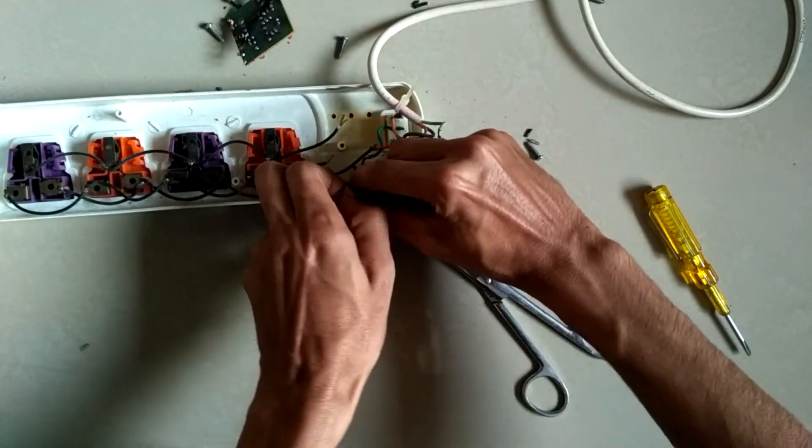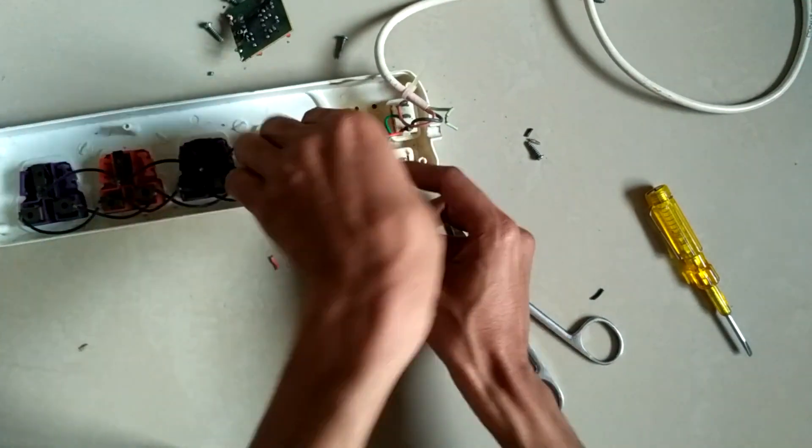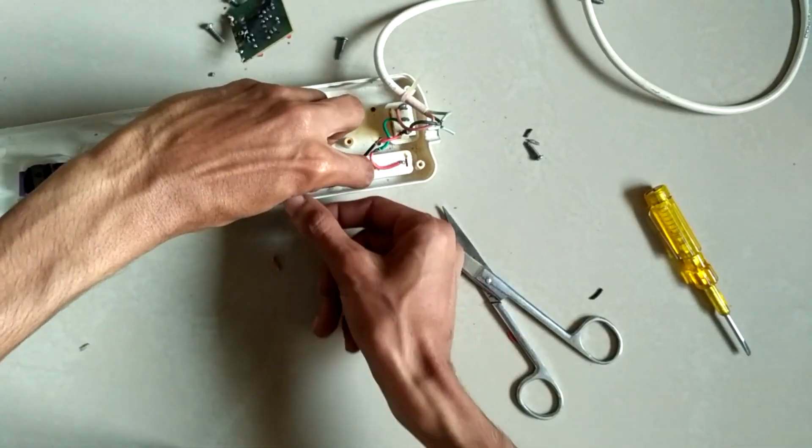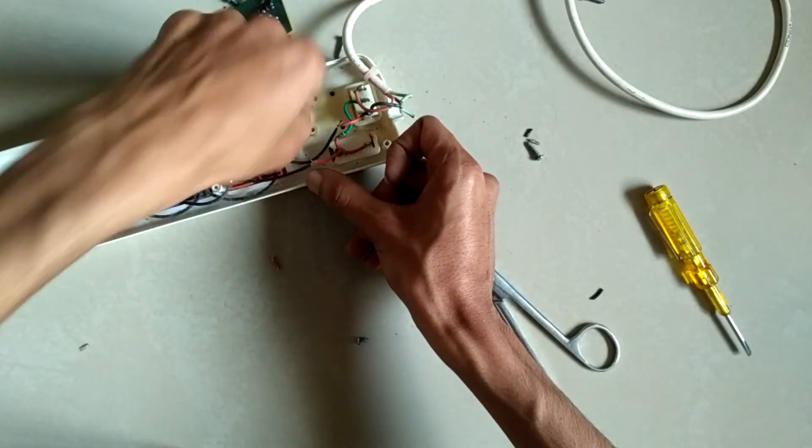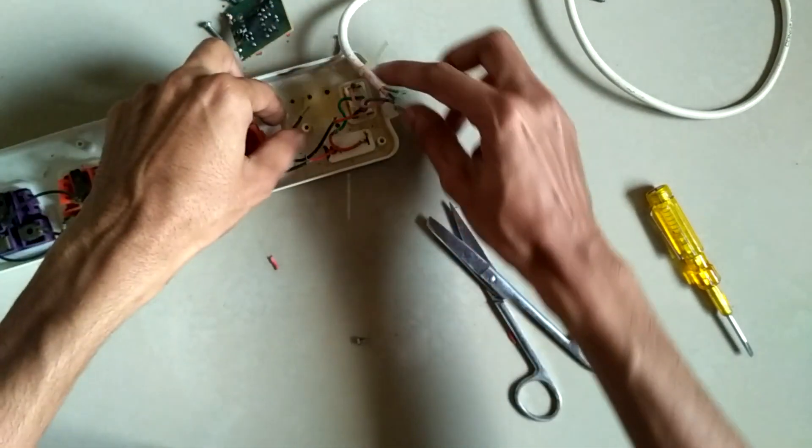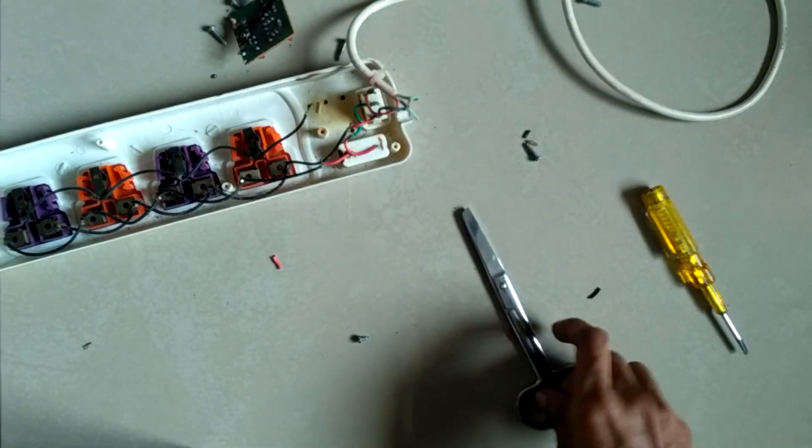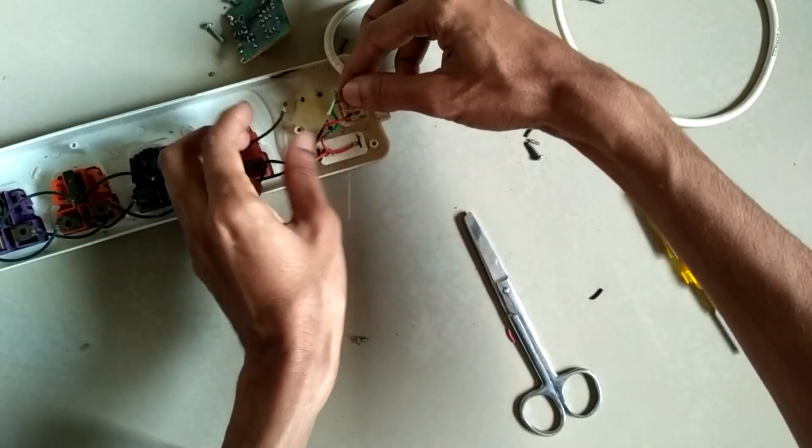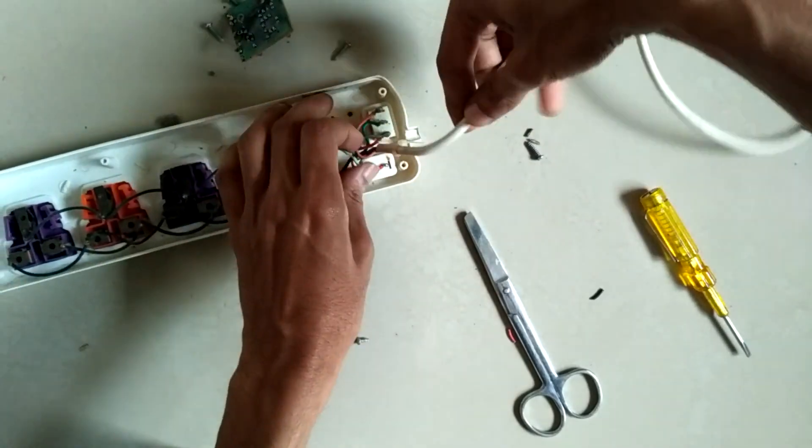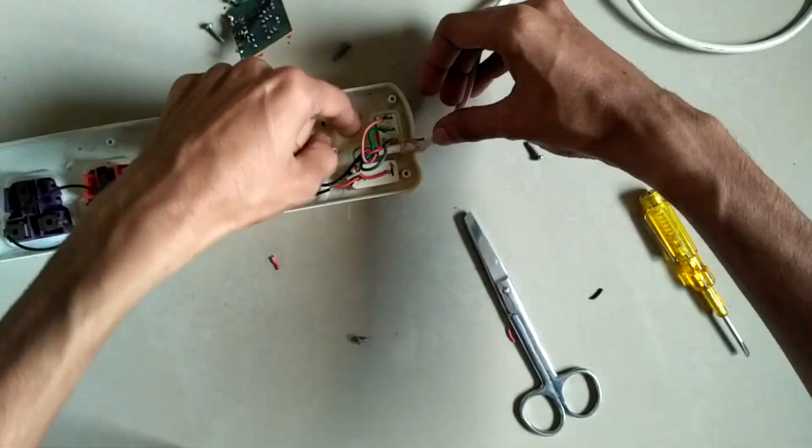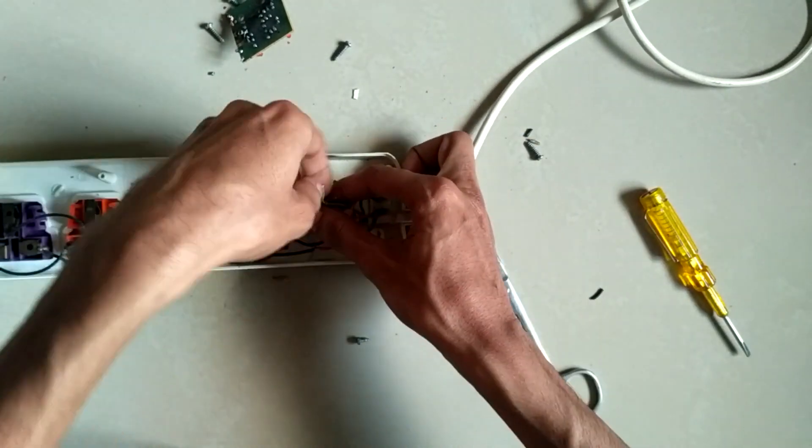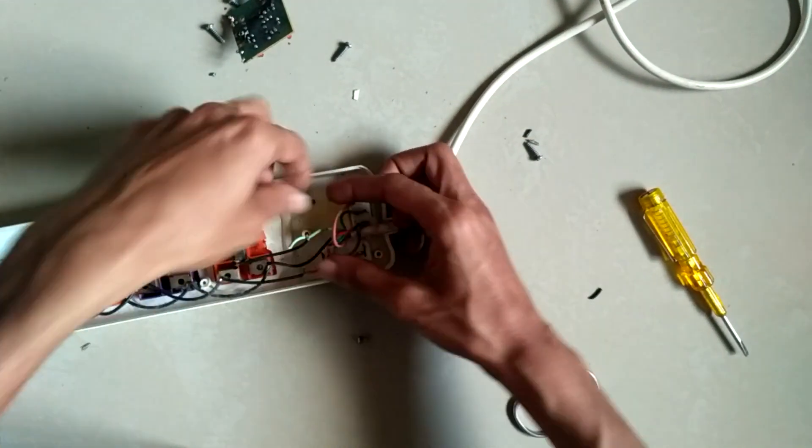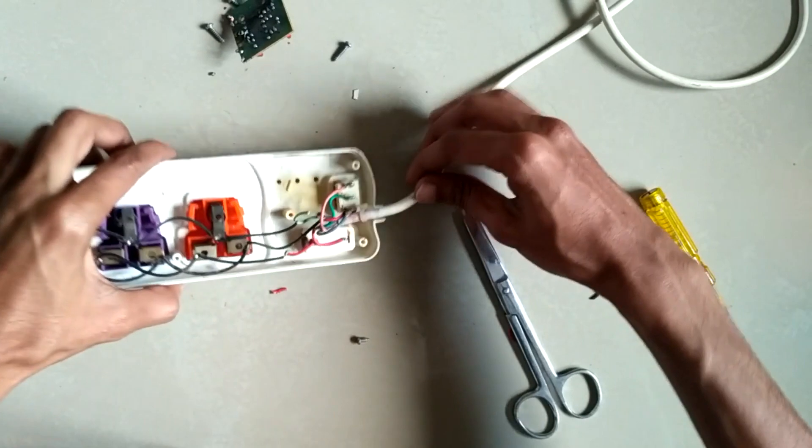Let's remove the tip of the cable and connect it to the power line. Now the final is earth pin. Let's bind them together. Now all the connections are connected.